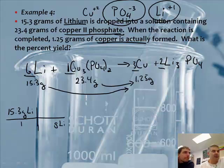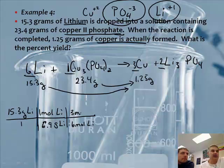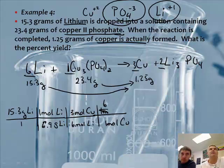So grams of Li to one mole of Li. Is it 7.0 or 6.9? It is 6.941. So we'll call it 6.9. We'll just go to the tenth. And then we're going to say 6 moles of lithium to 3 moles of copper. And then we're going to say 1 mole of copper to 63.5 grams of copper. And I get what, Mr. Sams? 70.4 grams of copper.